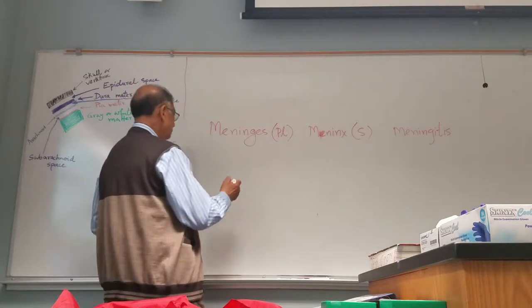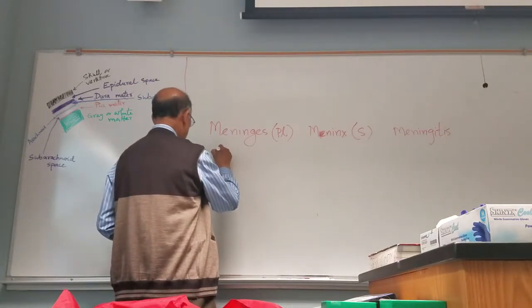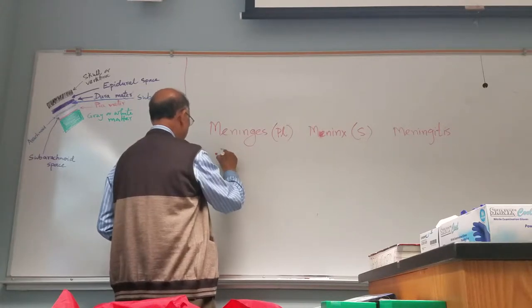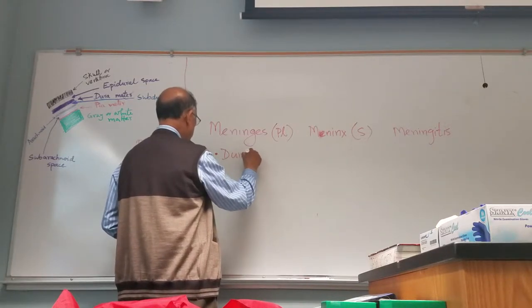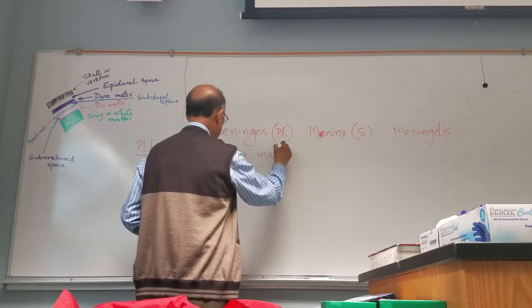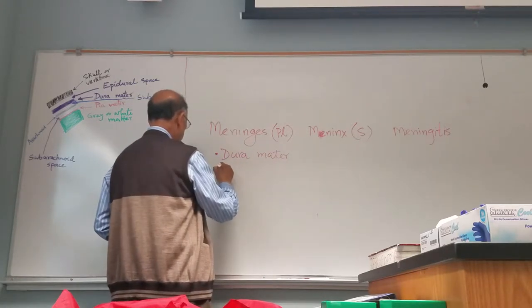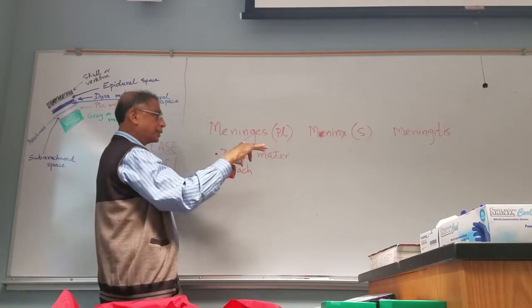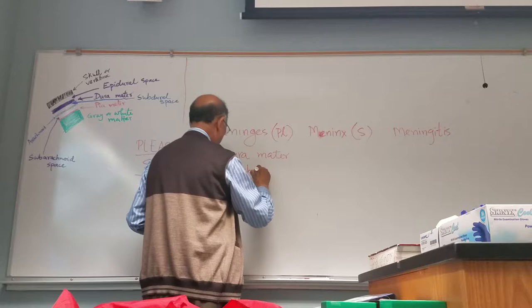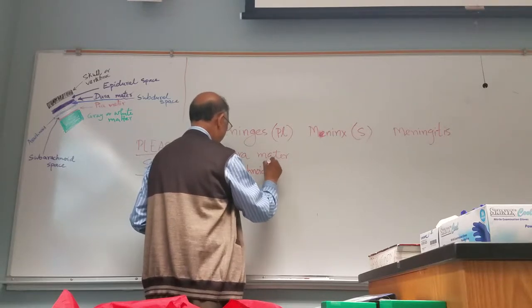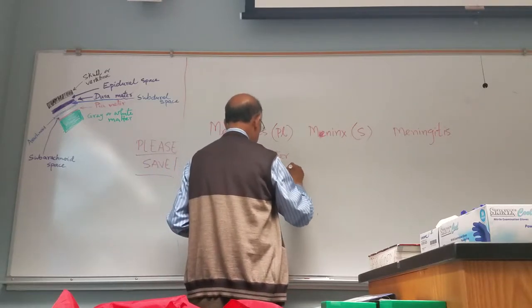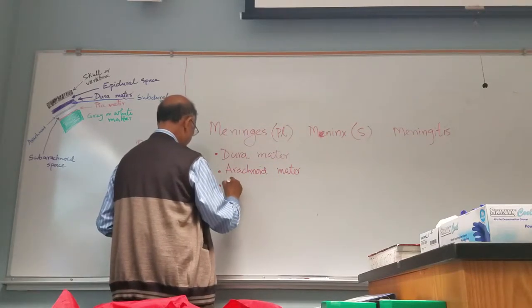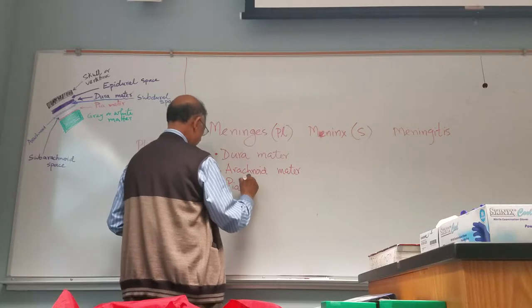there are three layers of coverings. Number one, dura mater. Number two, coming from outside to inside, arachnoid mater. And lastly, pia mater.